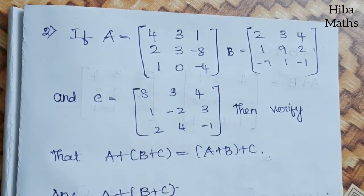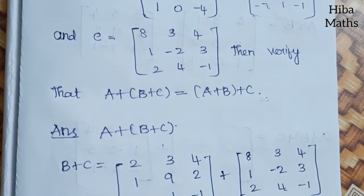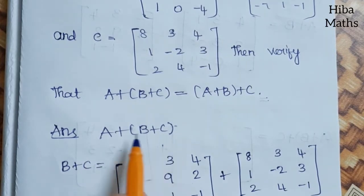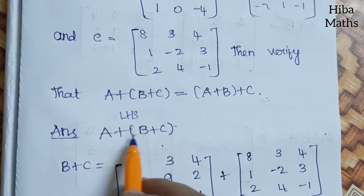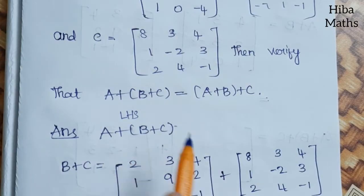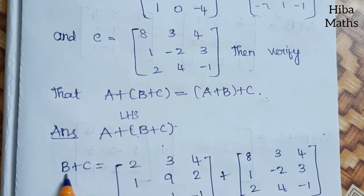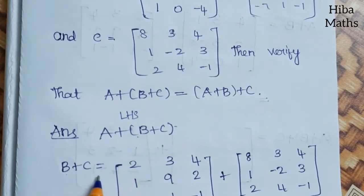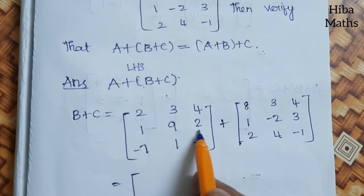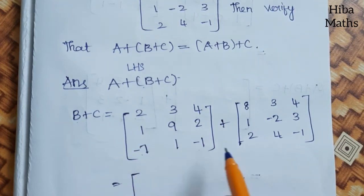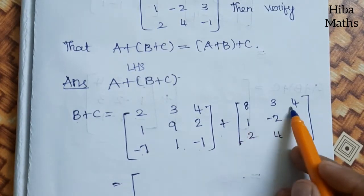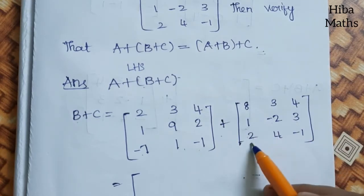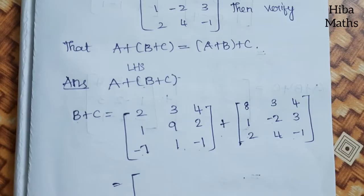We will calculate each side separately and check if both answers match. For prove sums, first we find A + (B + C). So left hand side: A + (B + C). First, we compute B + C. Matrix B is [2,3,4; 1,9,2; -7,1,-1] and matrix C is [8,3,4; 1,-2,3; 2,4,-1]. Now add these two.